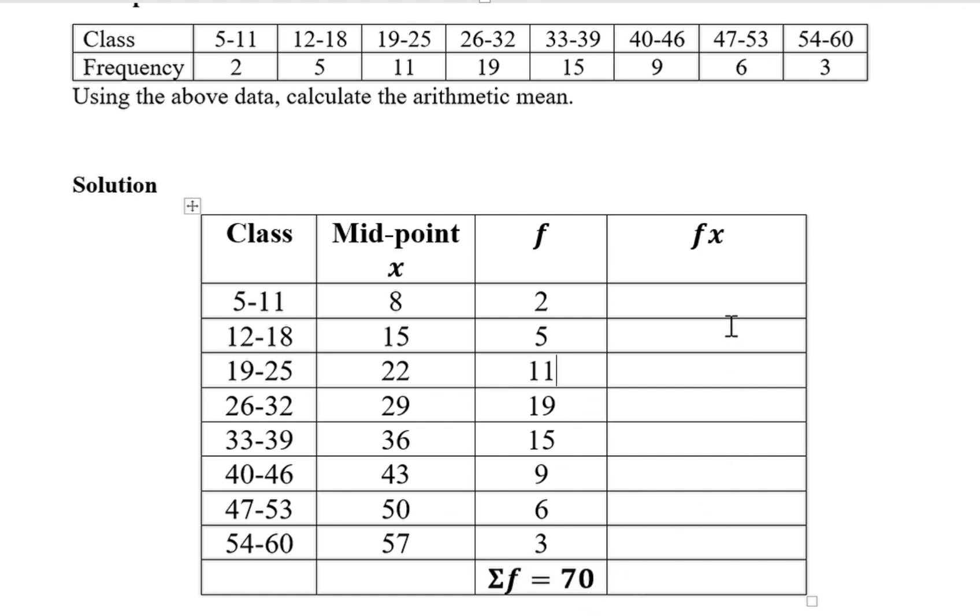The next thing is to calculate fx. This simply means you take a value in the x column, midpoint x, times the corresponding value in the f column. So 8 times 2 gives us 16. 15 times 5 gives us 75. 22 times 11 gives us 242, and the rest are done similarly.